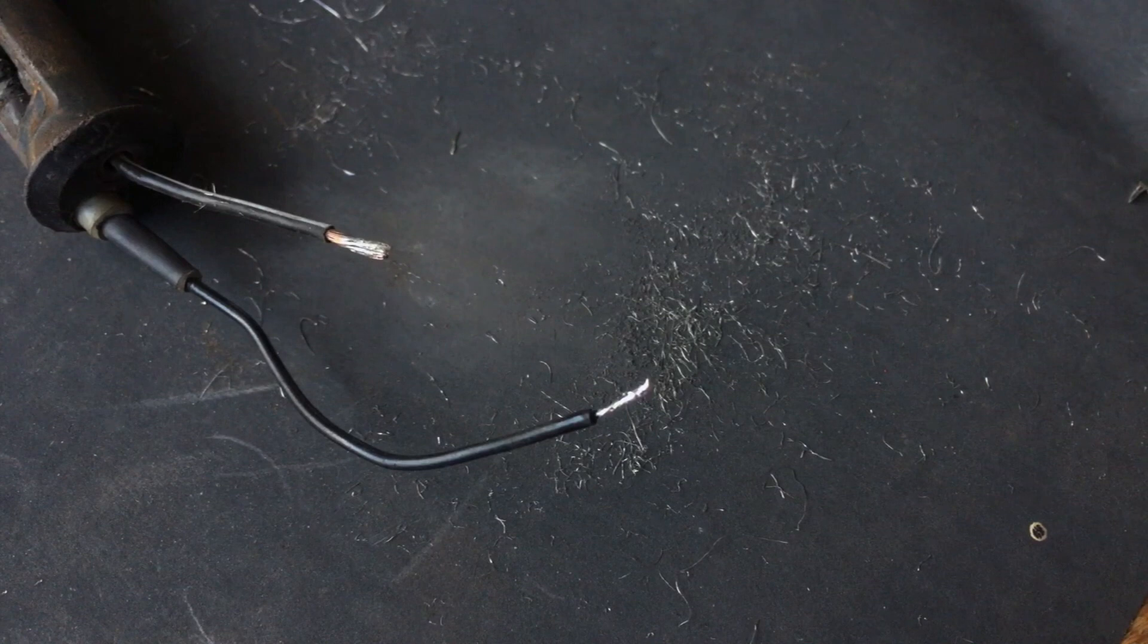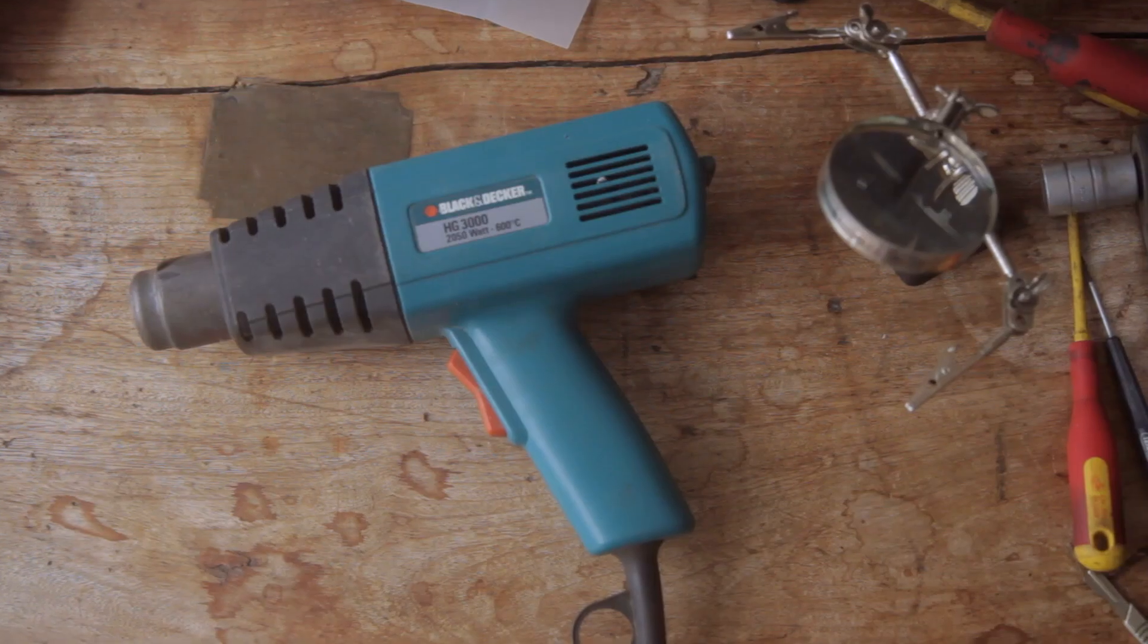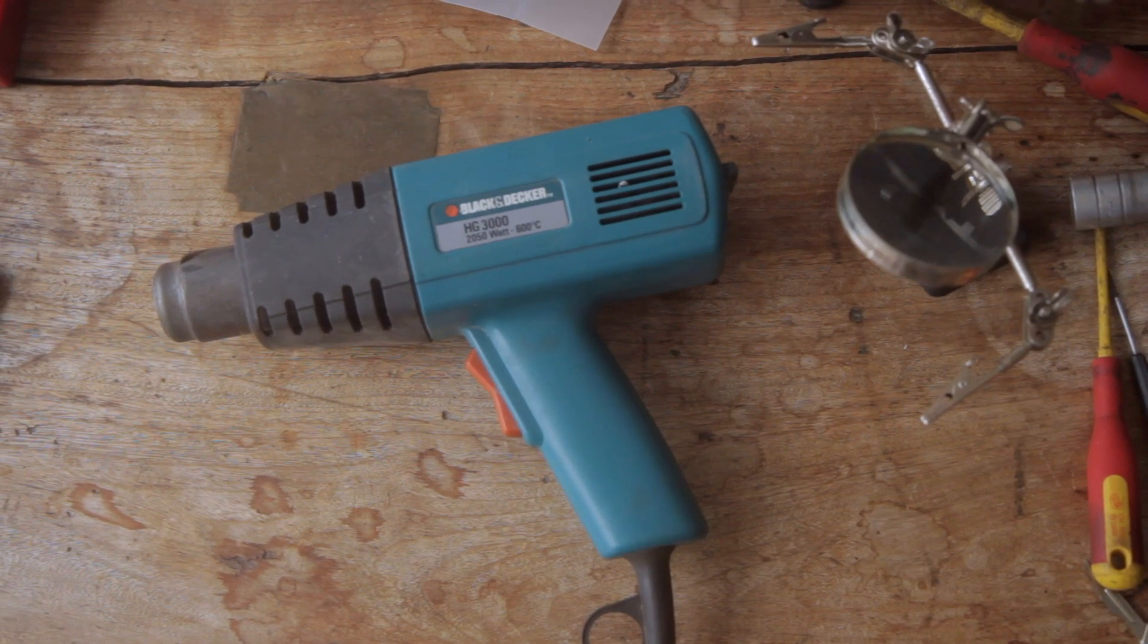Before we go to the car, I want to make a point: don't use a naked flame, a cigarette lighter or something like that to melt your heat shrink. Use the gentleman's hairdryer, the heat gun. It's the best way. It's the only way. Over to the car.